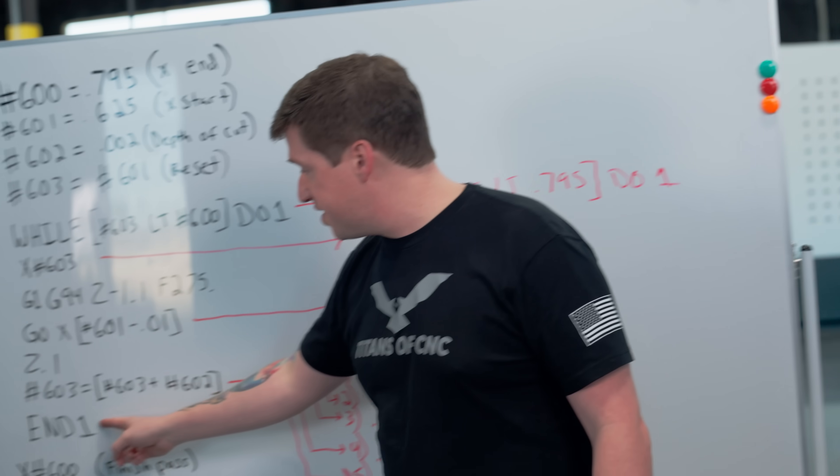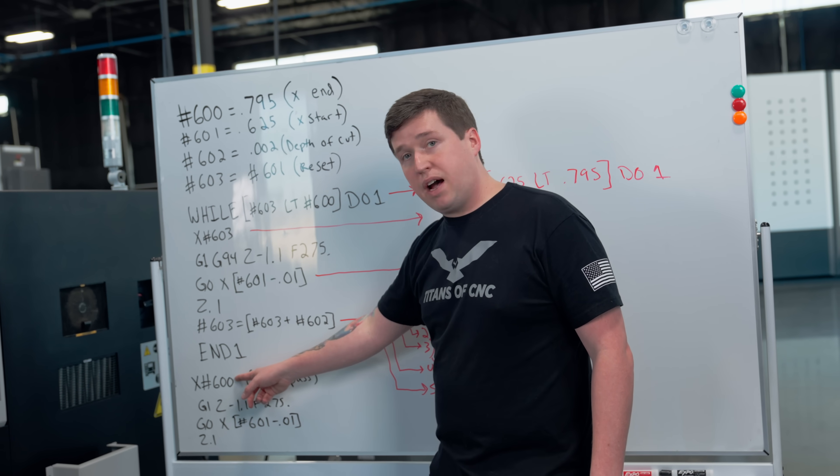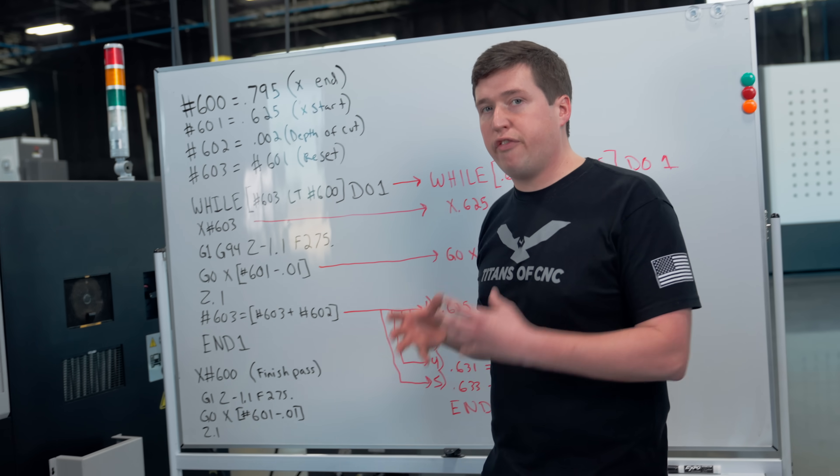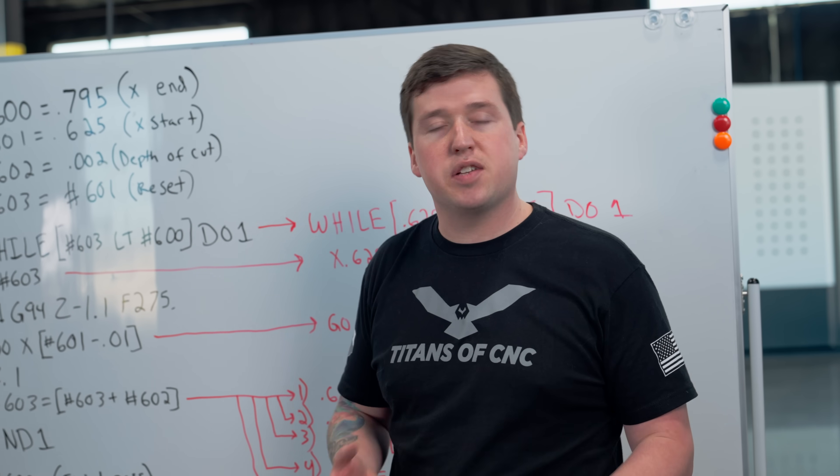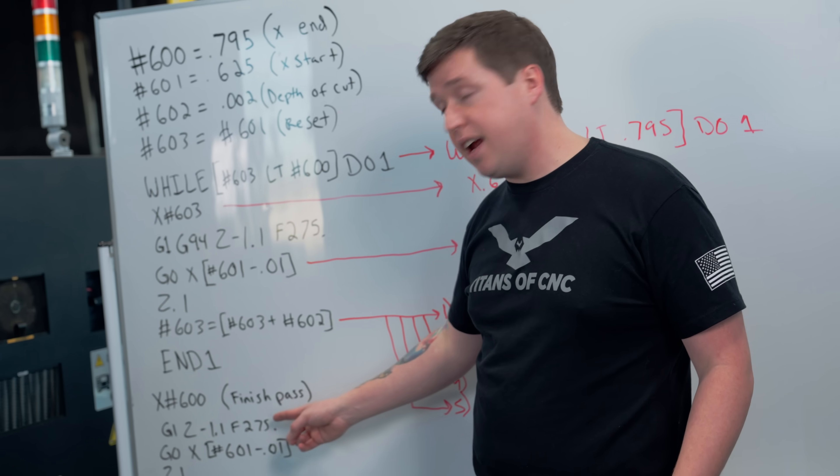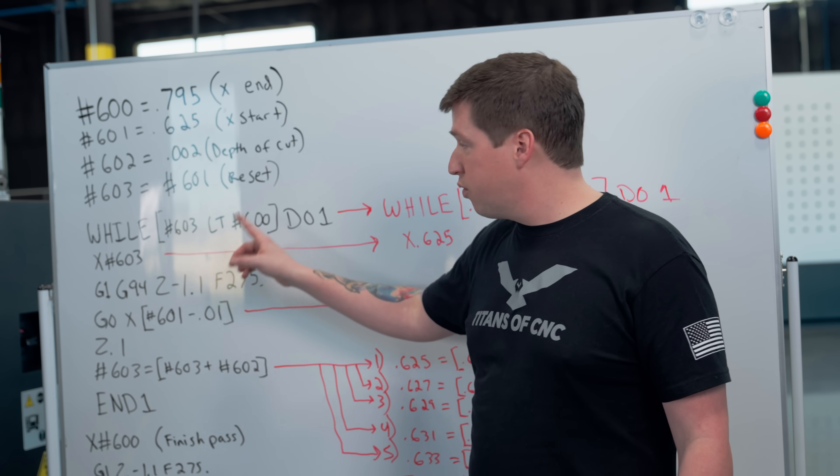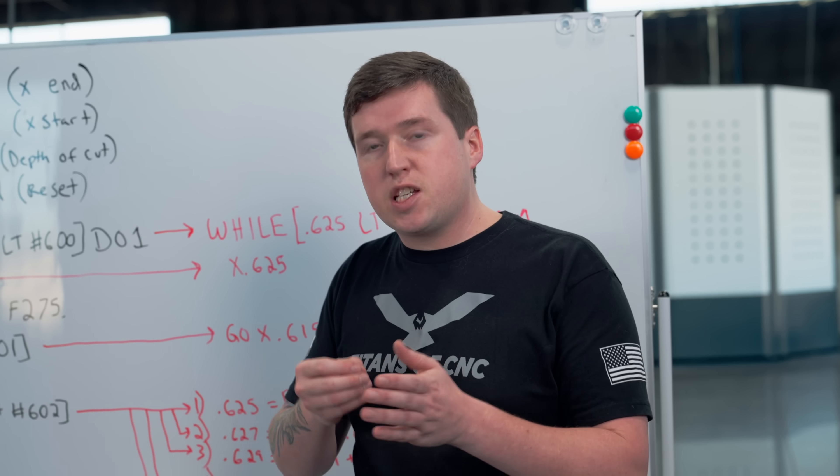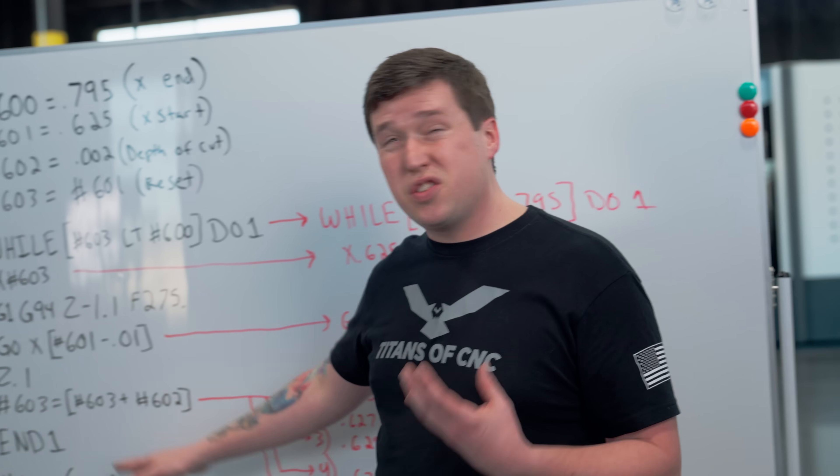Then we're going to do our finish pass. That's why down here I use a different X than 603. I go to X of pound 600, which is my X end. I could have done my finish pass in this while statement, but your finish pass is the one that really matters. That's what's going to determine your surface finish. I wanted to be able to adjust my feed rate on my finish pass. I want to go fast for all the roughing because that doesn't matter, and on that last pass I can really slow down and skim it smoothly to make it look as good as possible.